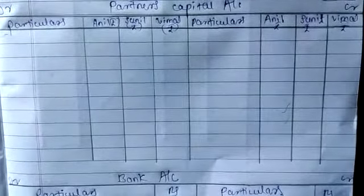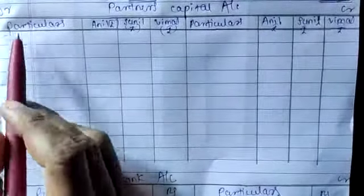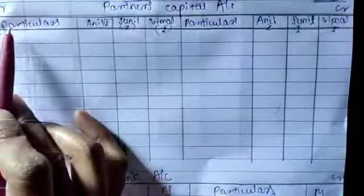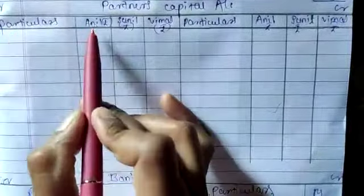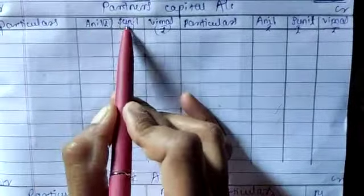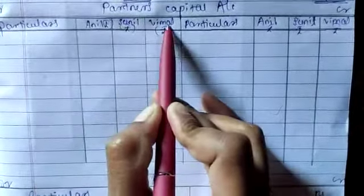Now we are preparing the partners capital account. Draw the lines first. Debit and credit sides you should put there. Particulars column, then Anil rupees, Sunil rupees, Vimal rupees — one amount column for each partner.